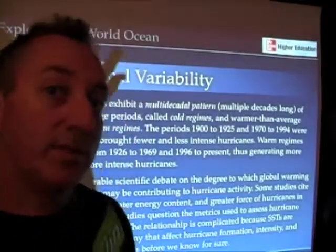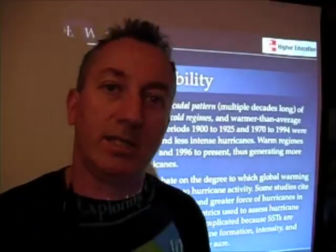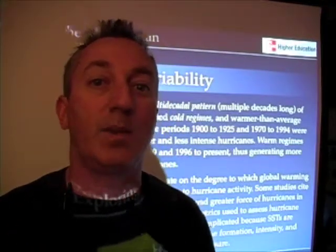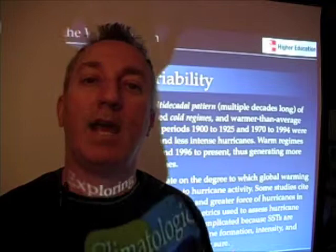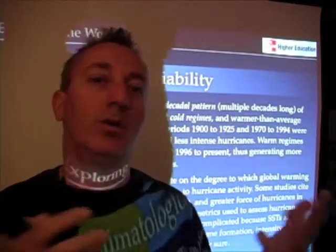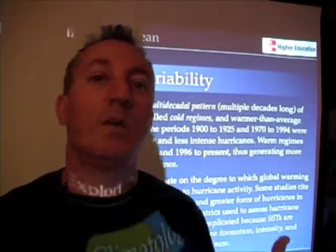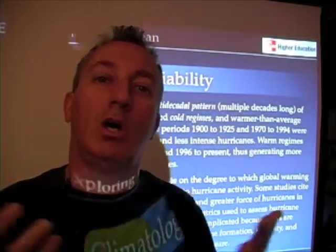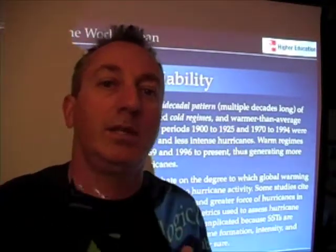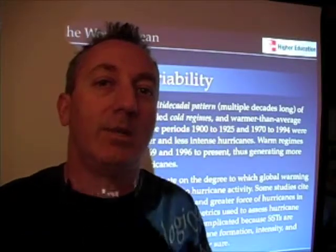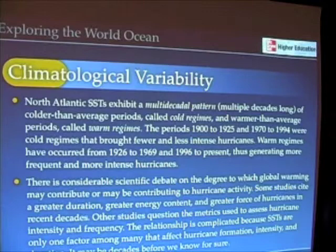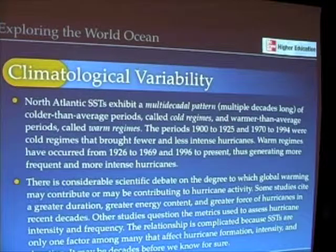Remember, these are averages. Hurricane Andrew in 1992 happened in the middle of a cold regime — it doesn't mean nothing bad can happen. It just means that, on average, we're going to have more or fewer hurricanes. It gives us some predictive capability, but it's a climate variable, a long-term variable, not something that tells us exactly what's going to happen on any given day. It's that variability that causes these periods of more intense or less intense hurricanes.